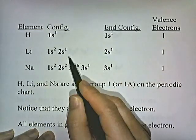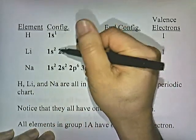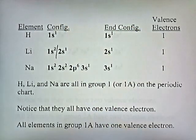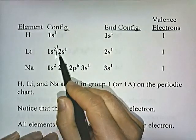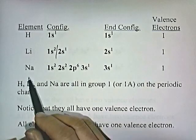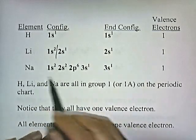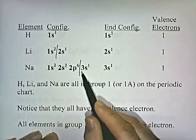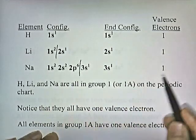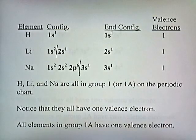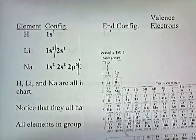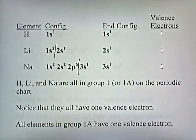Here's the configuration of lithium. We're only interested in the outer or valence electrons — those in the highest energy level. For lithium, the highest energy level is the second energy level, and we have one electron. For sodium, the highest energy level with electrons is the third energy level: 3s1 means it has one electron in the third energy level. So all of these elements have one outer or valence electron.